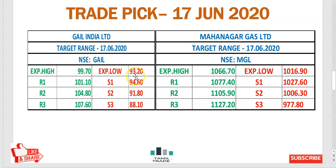You should always be careful when you are going for short sale — very careful in these areas because you are very near to 9,400. After this, 9,300 there is a supporting point. Maybe if it is lost, it will go down like this — same like Bahanagar Gas.